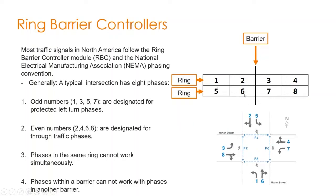If we assign phase one as the northbound left, that means the phase that cannot go with phase one — phase two — is going to be the conflicting phase, which is the southbound through. Phase one is a left turn, which is northbound left. Phase five will be the opposite left turn, which is southbound.